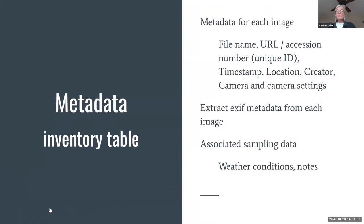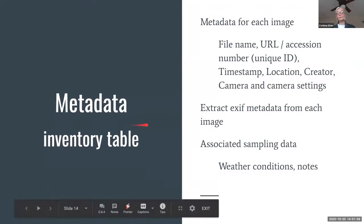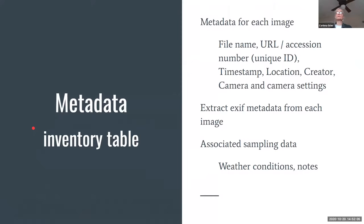The metadata file is encoded in the Ecological Metadata Language and includes general information about what, when, where, who, and how — common for all images in one data package. This breaks down into title, abstract, methods, geographic, temporal, and taxonomic coverage, creators, and associated people. Camera settings may also be included. Corina recommended putting an inventory table into the data package containing metadata for each image: file name, URL, or unique ID, timestamps, location, creator, and specific camera settings.